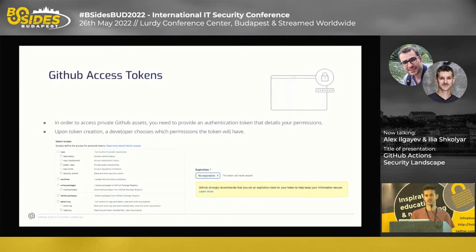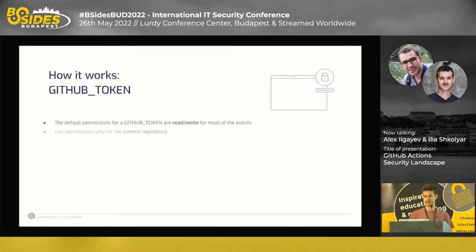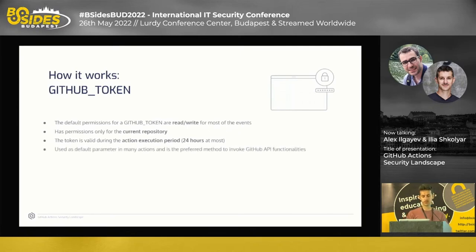When GitHub designed Actions, they wanted developers not to use personal access tokens inside workflows. To overcome this, they created the GitHub token, provided for every workflow that starts running. Its default permissions are read and write for most events, scoped only to the repository where the action runs. The token is valid during the action's execution period, or 24 hours at most, and is the preferred method to invoke GitHub API functionalities.